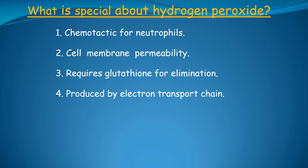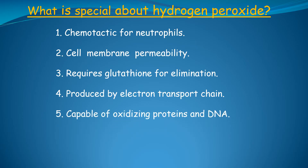Electron transport chain activity increases during hypermetabolic states. This explains the increased risk of ulcerative colitis long after smoking cessation. Number five, capable of oxidizing proteins and DNA. Hydrogen peroxide is a powerful oxidizing agent capable of oxidizing and disintegrating intercellular tight junctional proteins, which are the cement that holds the cells together.